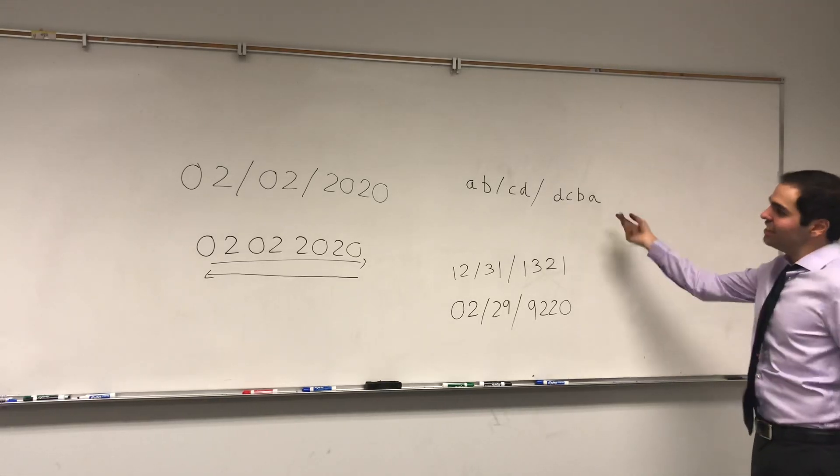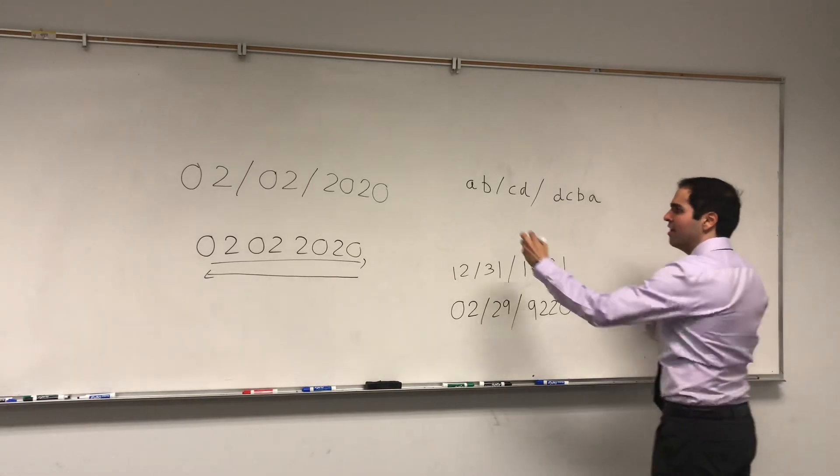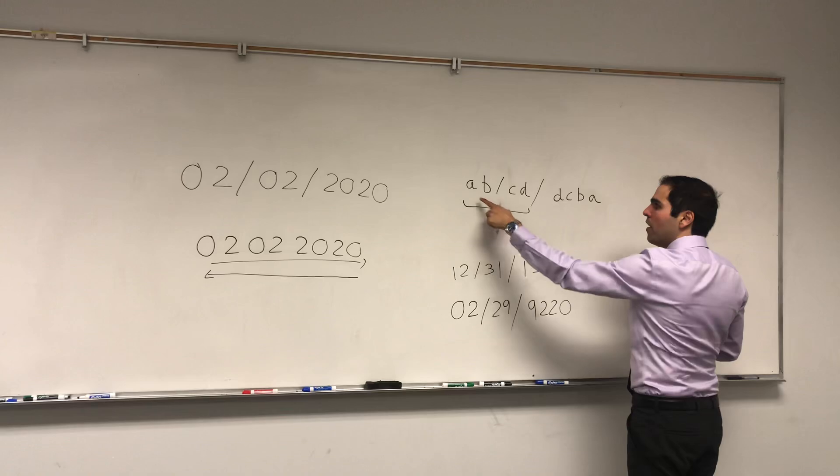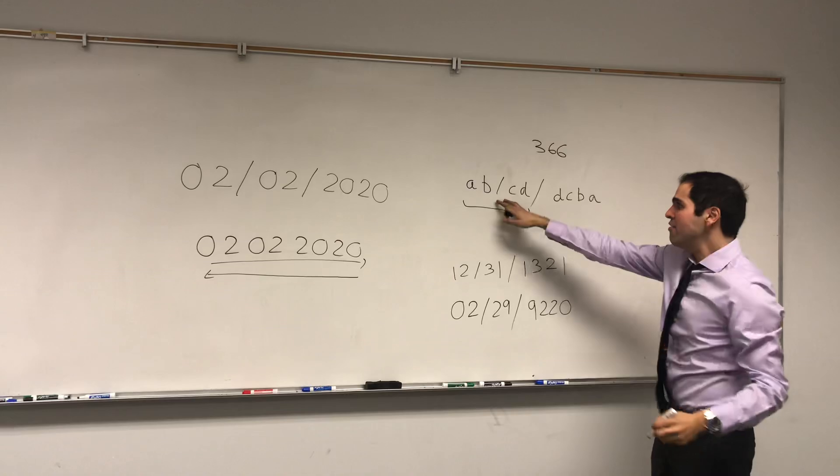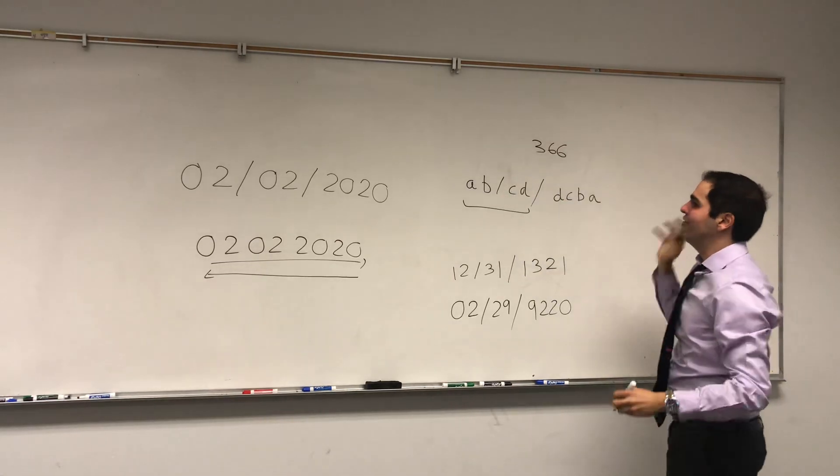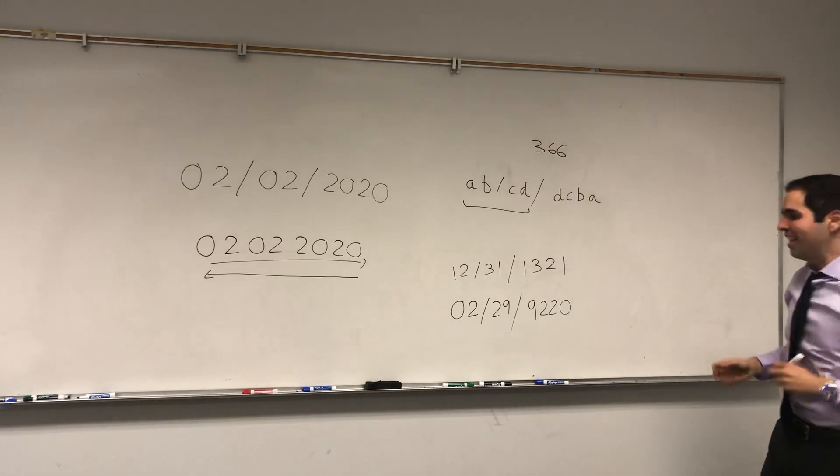So in fact, the answer to how many palindrome days there are turns out they're 366, because for every valid day you have a corresponding palindrome day.